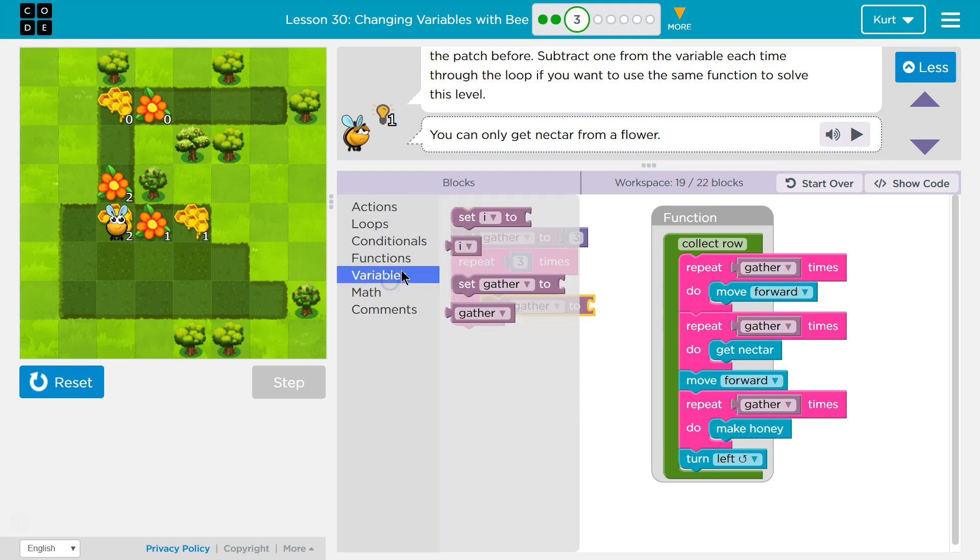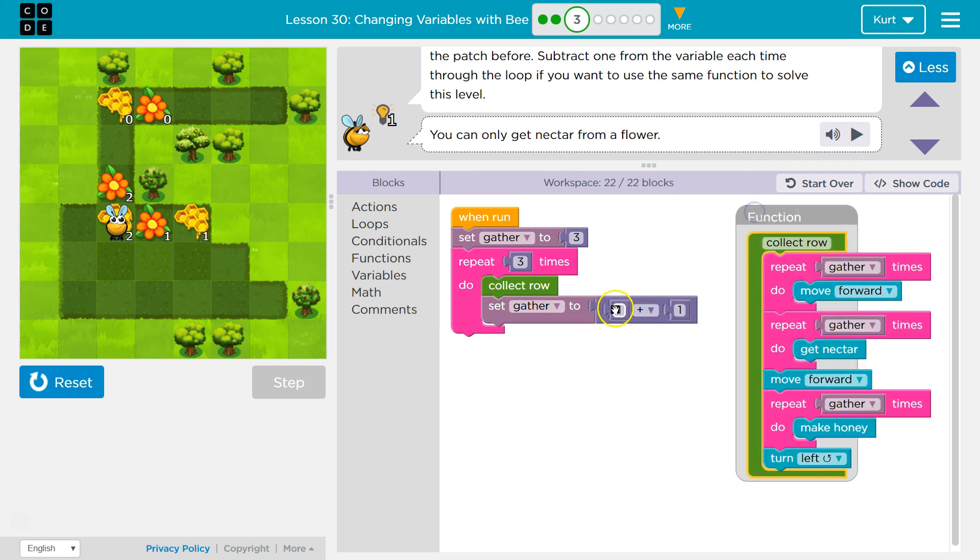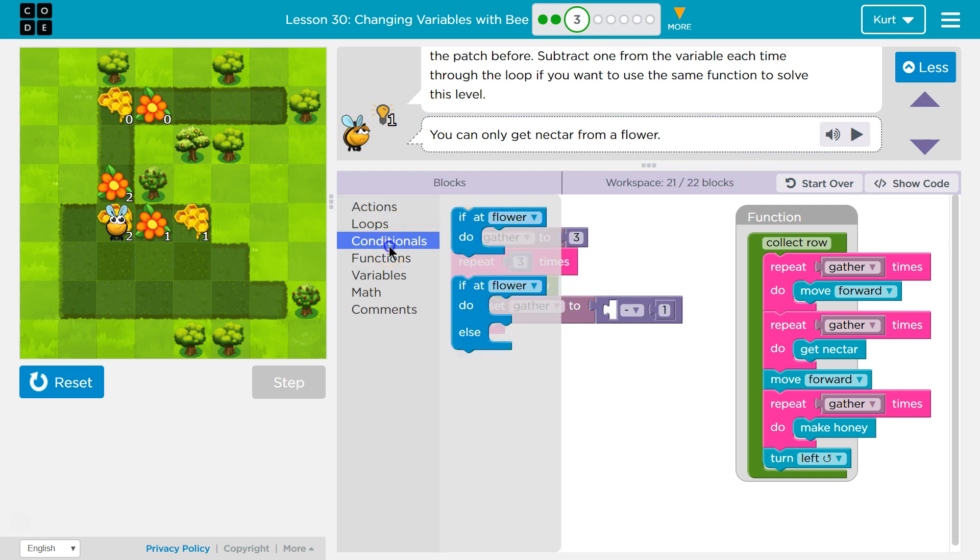We want to minus 1 from it. Well, we don't want to add. Let's see, do we have options? Math 1 minus 1 from it. Except, what - this is weird. I don't want this. I just want to take 1 away from gather. What if I do this?